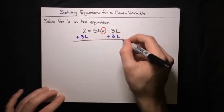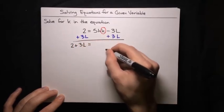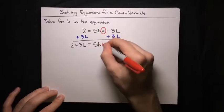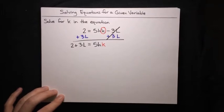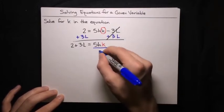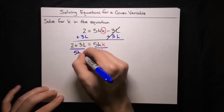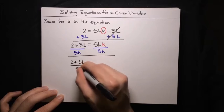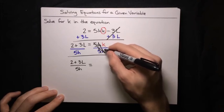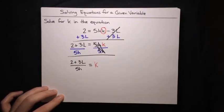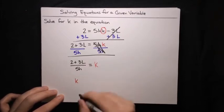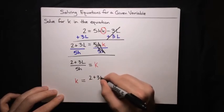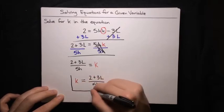The result is on the left hand side we've got 2 plus 3l. On the right hand side, we've got 5h times k, and then the minus 3l and plus 3l cancel. Now we need to get rid of the 5h that's multiplying the k. We can use the multiplication principle: in order to cancel out a multiplication, use a division. So let's divide both sides by 5h. The result is that on the left hand side we've got 2 plus 3l over 5h, and on the right hand side the 5h cancels, leaving just k. Flipping the equation around, k equals 2 plus 3l all over 5h. And there we go — we've solved for k.